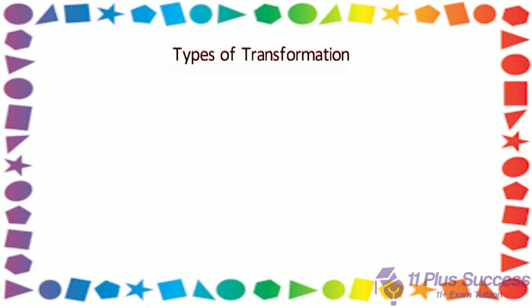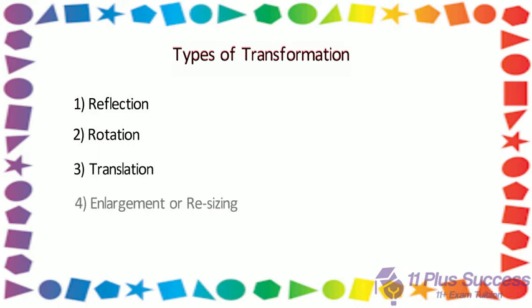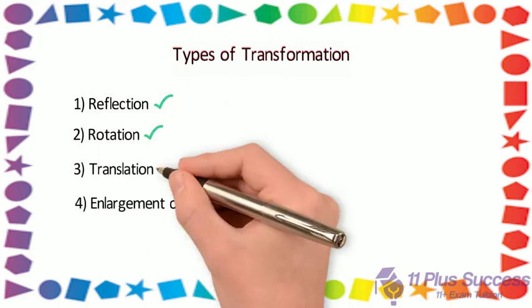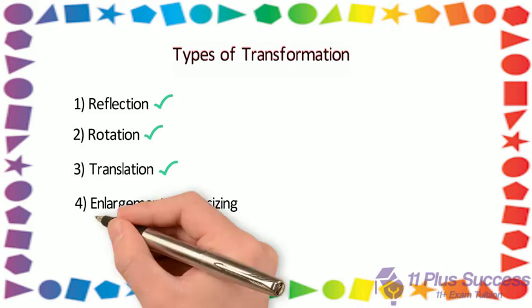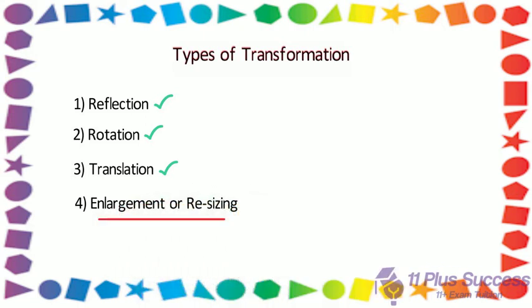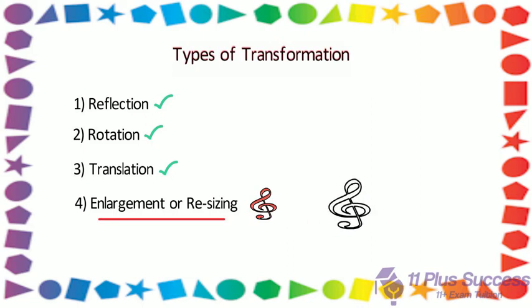There are four types of transformation. Three of them do not change the shape or size of the original image, and only one type, which is called enlargement, changes the size of the original image being transformed.